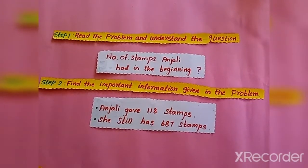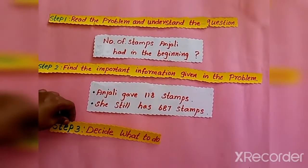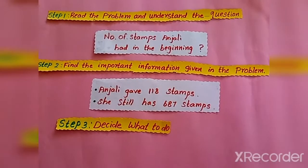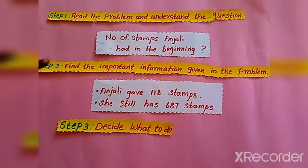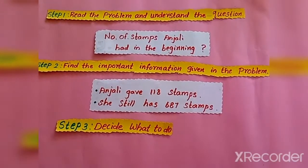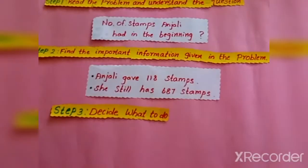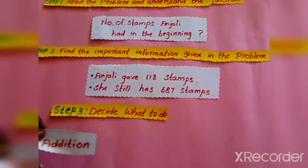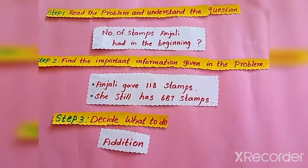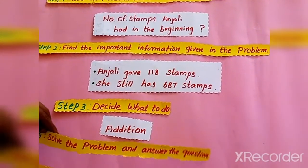Now let us see step 3. We have all these pieces of information, so in step 3 we have to decide what we have to do. Since we have to find the number of stamps in the beginning, we have to use the operation of addition.